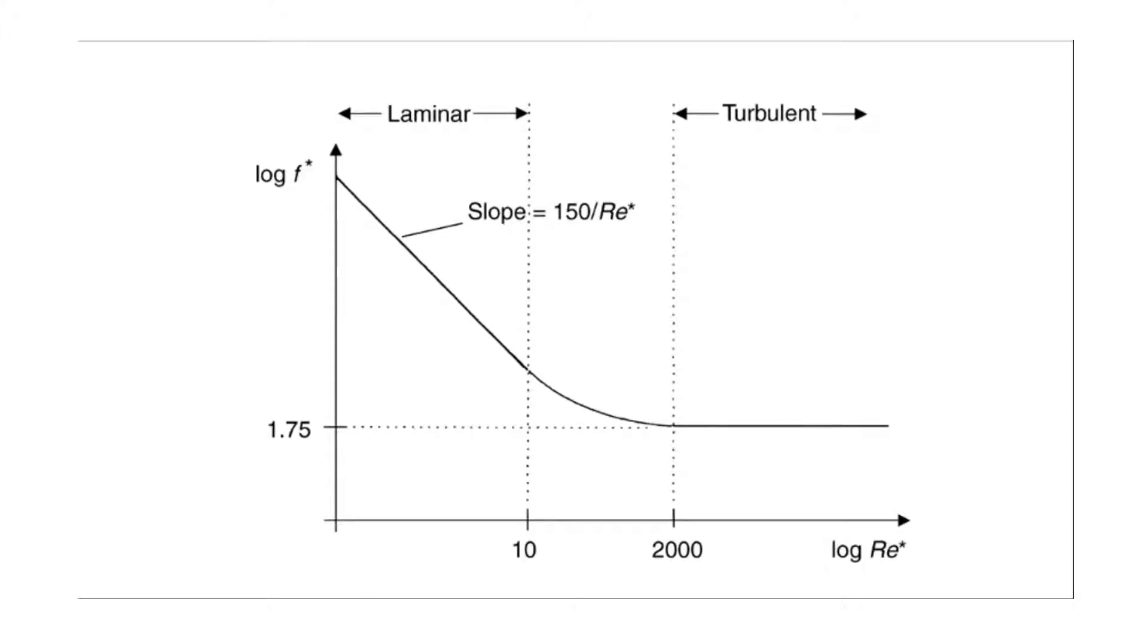The first section is based on laminar flow which is seen here and as you can see it has a negative slope and it is linear throughout this section. During the turbulent flow regime it is a constant of 1.75 or the log of 1.75, and then during the transition phase which is here the slope is slightly exponential.